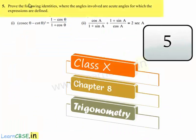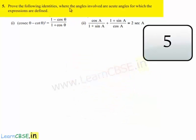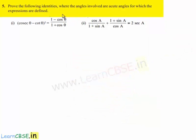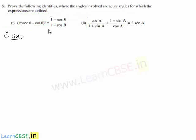Moving on to the fifth question, prove the following identities, where angles involved are acute angles for which the expressions are defined. Now moving on to the solution for the first bit. He has given an equation and asked us to prove that.